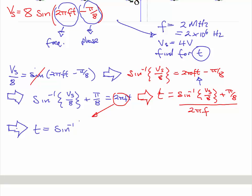We can express it as t = sin^(-1)(4/8) + π/8, all over 2πf. Frequency was 2 megahertz, which is 2×10^6, so it's that times 2×10^6.